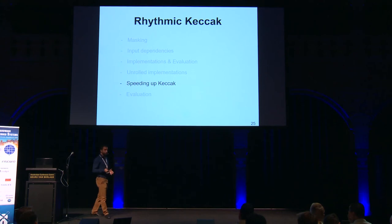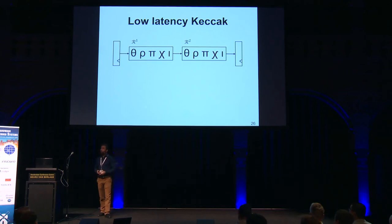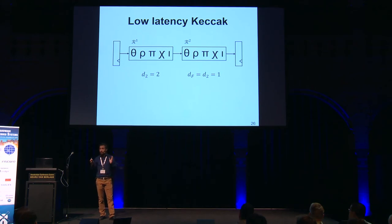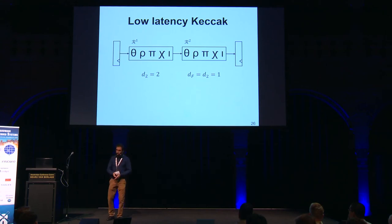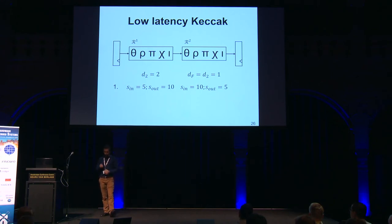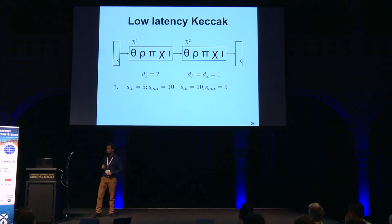We apply this methodology to speed up our Keccak implementations, executing two rounds at once without registers in the middle. Using the previous equations, the first layer needs a second-order sharing and the second layer needs a first-order sharing, since Keccak's non-linear operation has algebraic degree two and we target first-order security. We first use a sharing scheme with five inputs in the first layer producing ten outputs, which the second layer then compresses to five outputs.